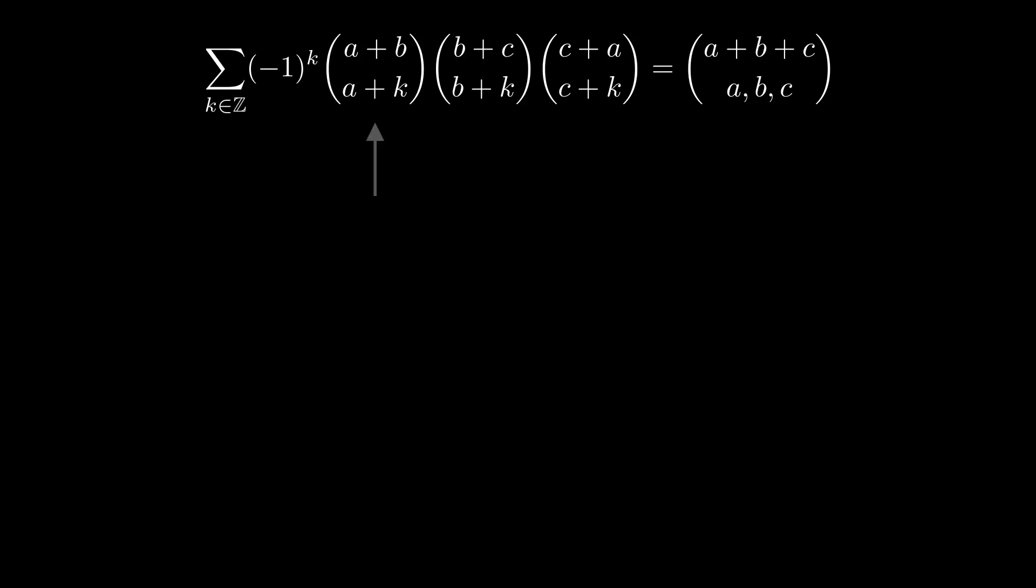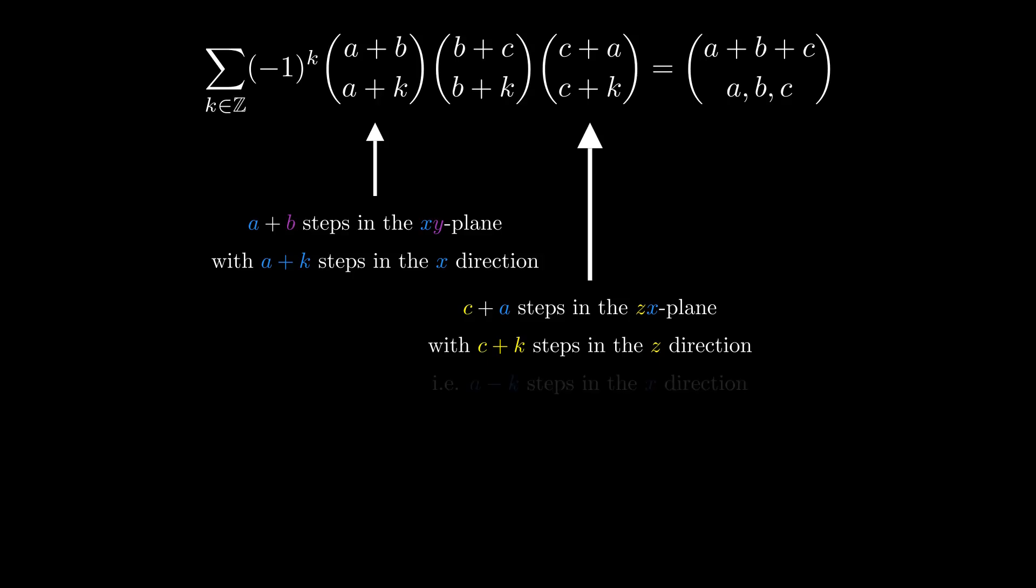We see that we have (a + b) choose (a + k). That feels like choosing a path in the xy plane with a + k x steps. And the third term is (c + a) choose (c + k), which is like choosing a path in the zx plane with c + k z steps. That means it would have c + a - c - k which is a - k x steps. This is interesting, those two conditions combined are saying that we're going to choose a total of 2a steps in the x direction.